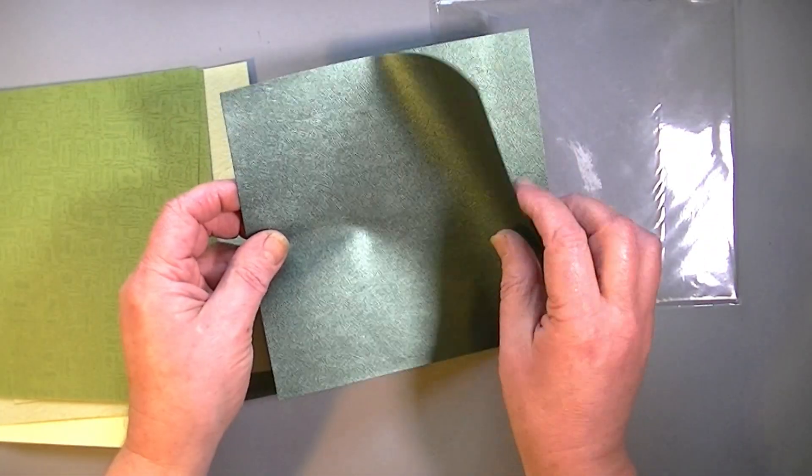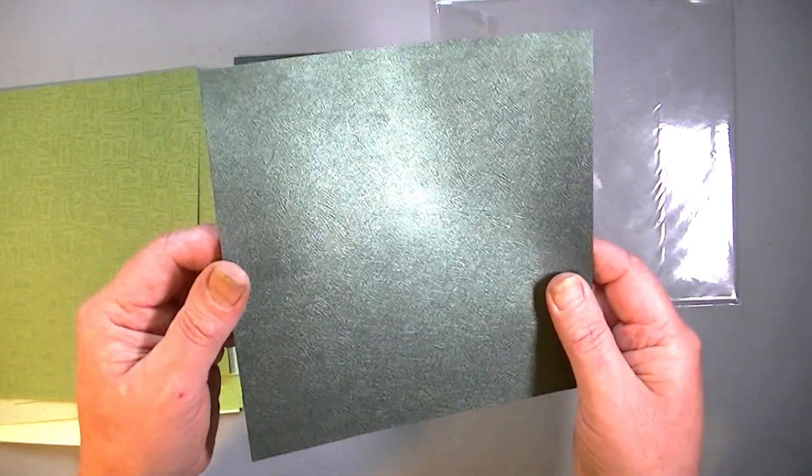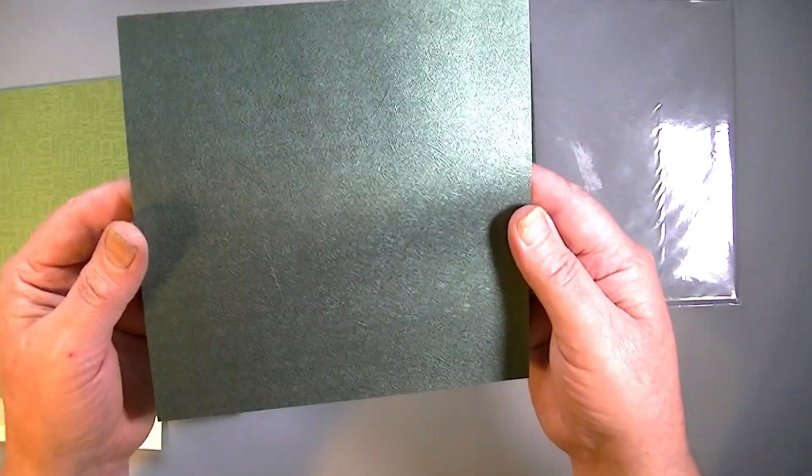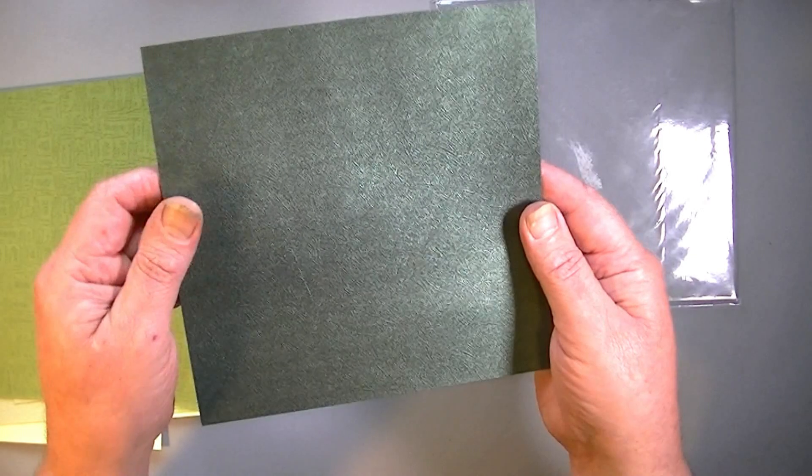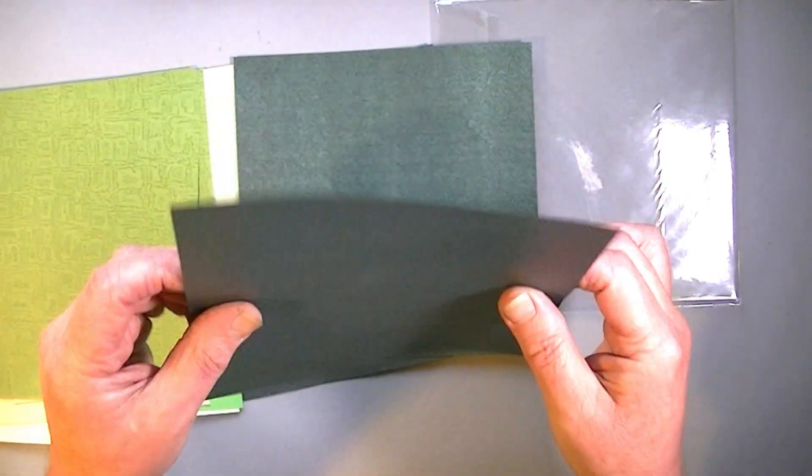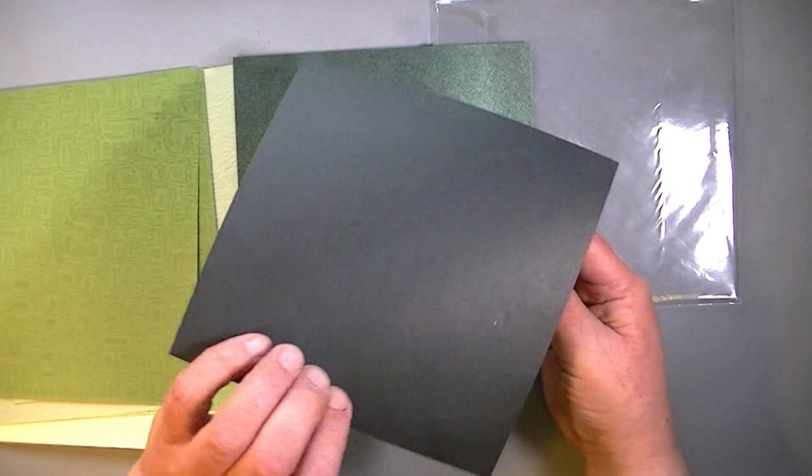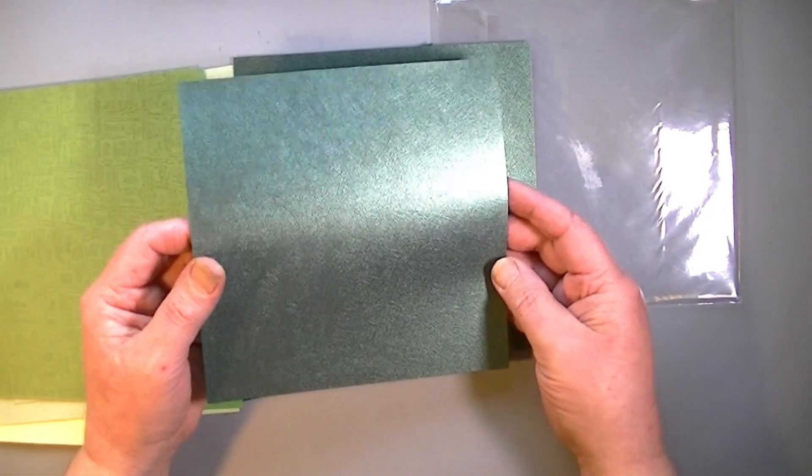And finally we get these sheets which are - I wouldn't call it green, but that's a really nice subtle embossed texture, shiny on one side and black on the other. And this is probably the most useful for many people: to get a nice black with a subtle color.